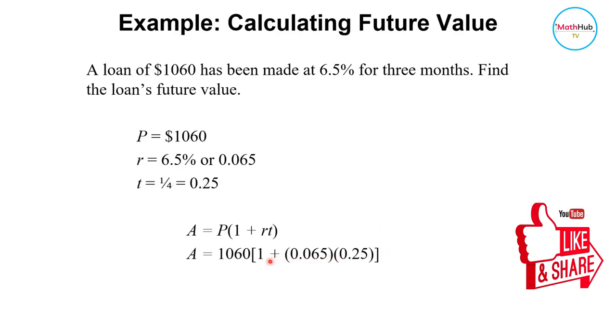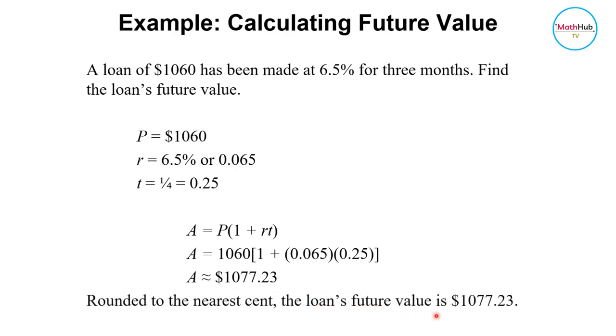Remember, if you solve for this one, you have to solve first the one inside the parenthesis, and then multiply it to the number here. And you get approximately equal to $1,077.23. The loan's future value is $1,077.23. This is the amount of money you will have to pay back.